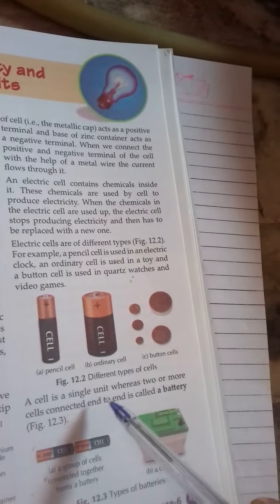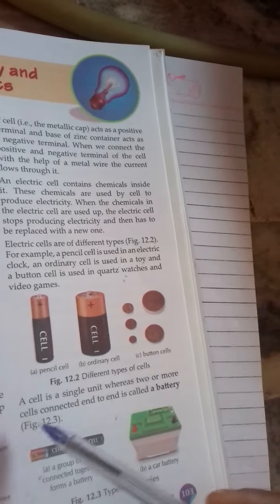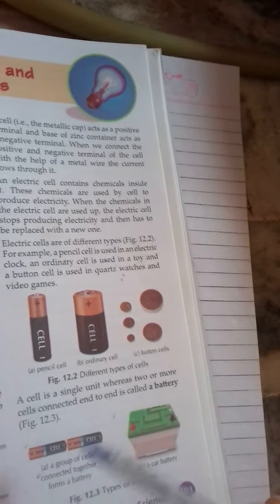A cell is a single unit where two or more cells connected end-to-end is called a battery.